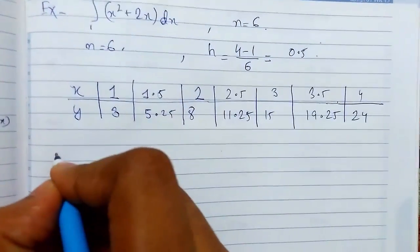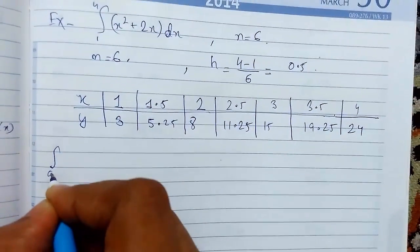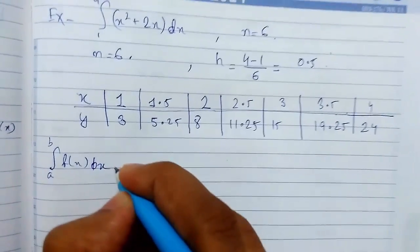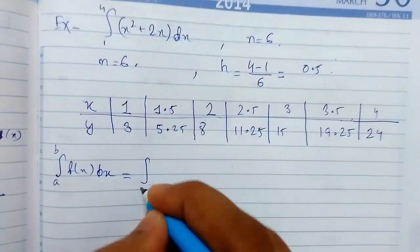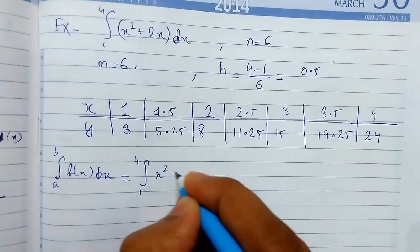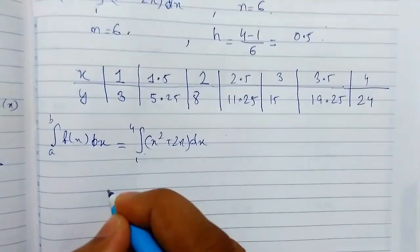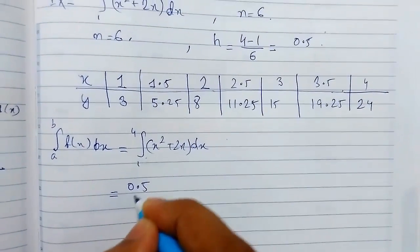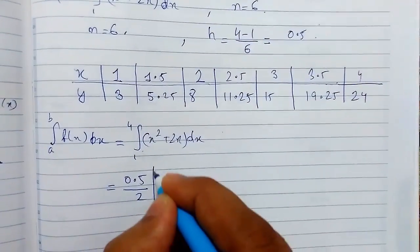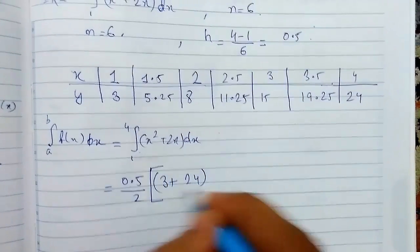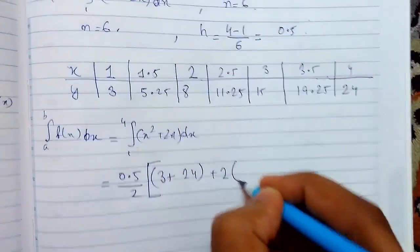Now I'll put it in the integration formula. The integral from a to b of f(x)dx equals the integral of (x² + 2x)dx. This equals (h/2) = 0.5/2 multiplied by [y0 + yn + 2(...)]. yn is 24, and all the middle terms are multiplied by 2.